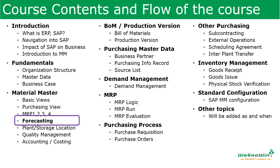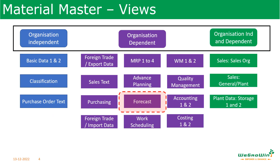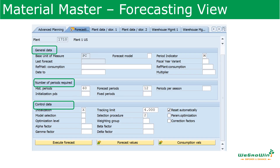We have been discussing basic views, purchasing views, MRP1234. Now we are going to discuss the forecasting view. Forecasting view contains details related to organization-dependent parameters, so this is under the organization-dependent section. Here we see the forecasting view details of the material. Depending on the material type, whether this view is required or not would have been configured in the material type — this was discussed during the material type discussion.